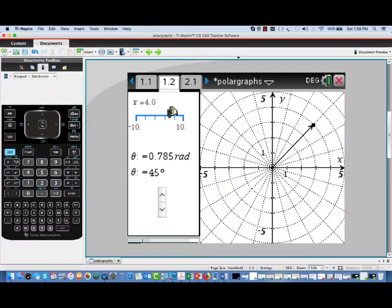Similarly, we can change the angle using this clicker. If I increase the angle, advancing it, notice the point is moving counterclockwise. And if we decrease the angle, that's going to move the point clockwise. And in fact, you can see we can even move into negative angles.